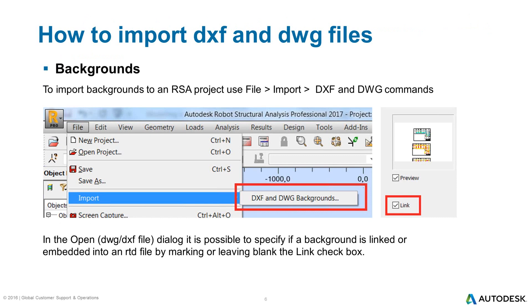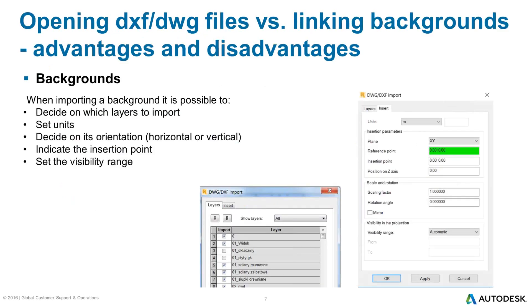If you mark the link checkbox, the file is read from the indicated location and it doesn't increase the RTD file size, but you need to send it along with the Robot model if you want somebody else to see this background. When importing a background, it is possible to decide which layers to import, set units, decide on its orientation — horizontal or vertical — indicate the insertion point, and set the visibility range.